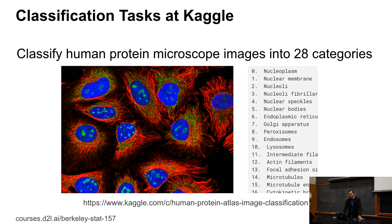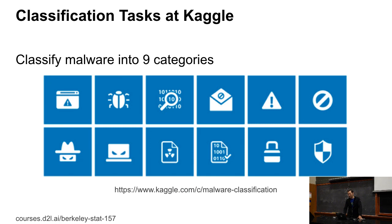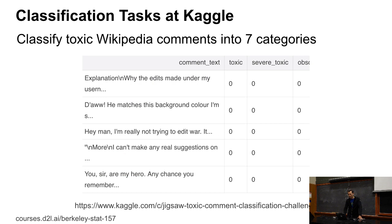There are lots of different others. For instance, on Kaggle, you could try to classify proteins in terms of what they are and what they do, or you could find out what type of malware you're dealing with, or what are toxic Wikipedia comments in terms of which category they are.